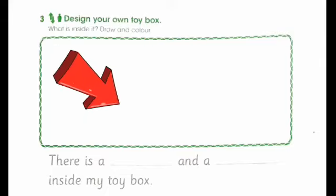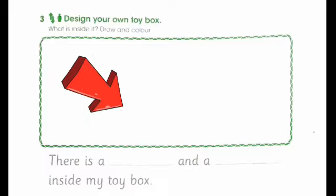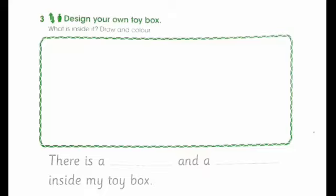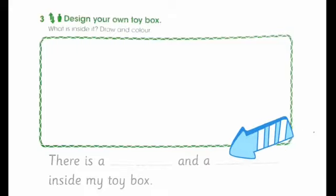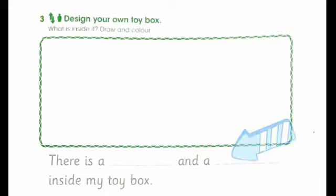Draw the toys you will put in your toy box. You can choose any toy you want to draw. Then I want you to complete this sentence — it says: there is a blank and a blank inside my toy box.